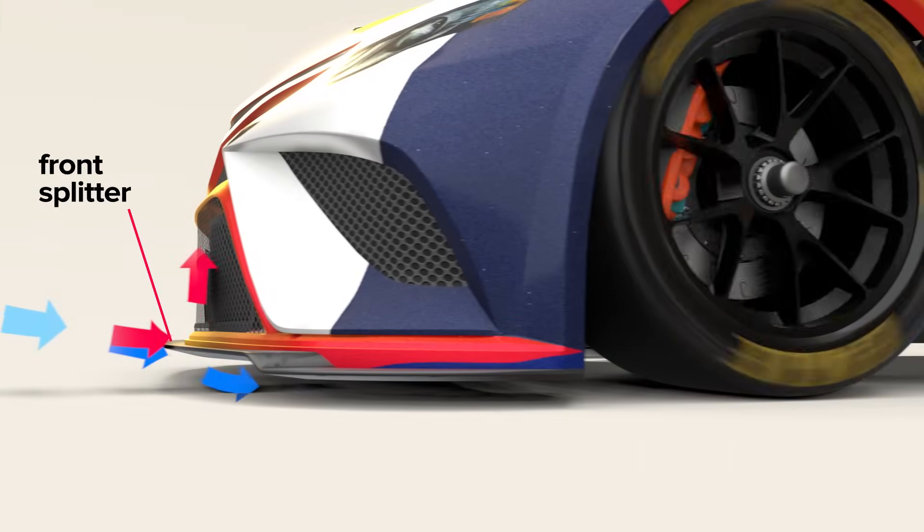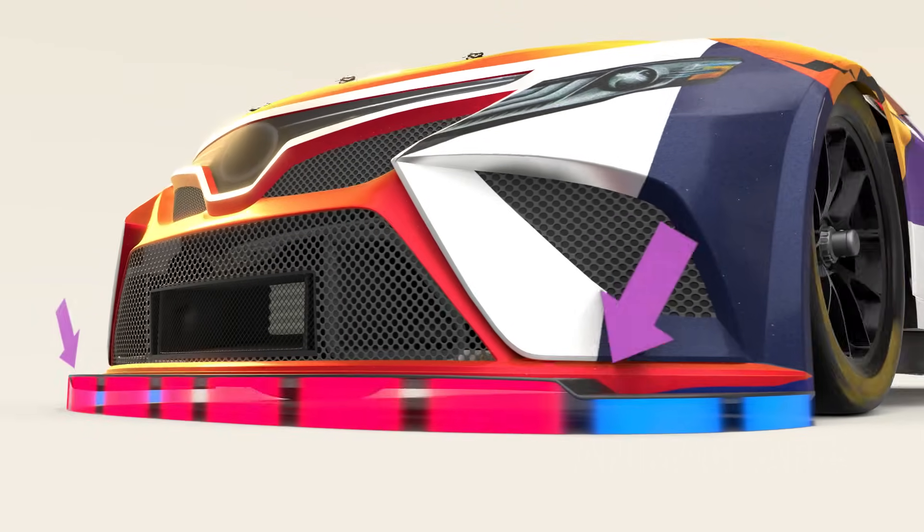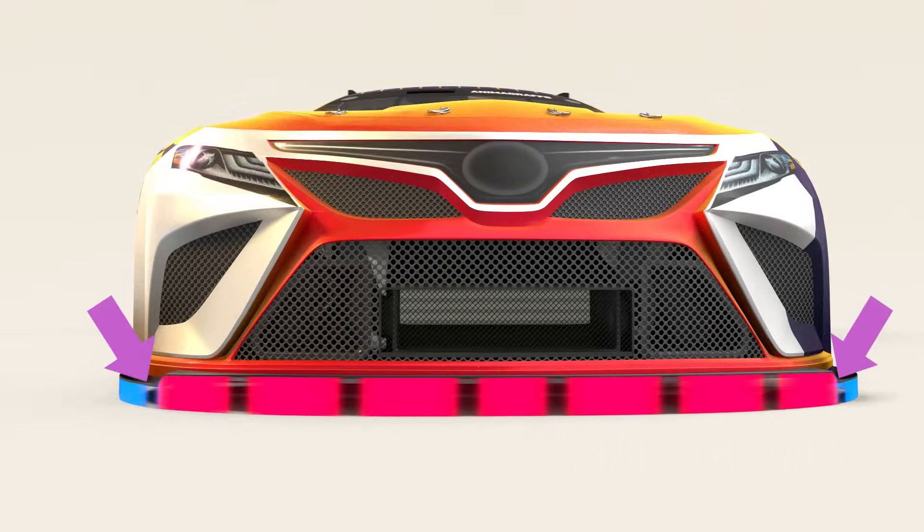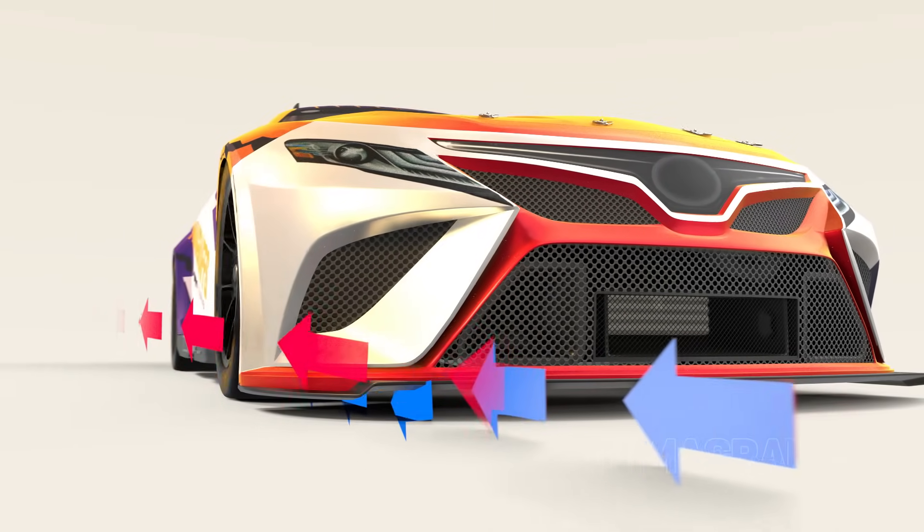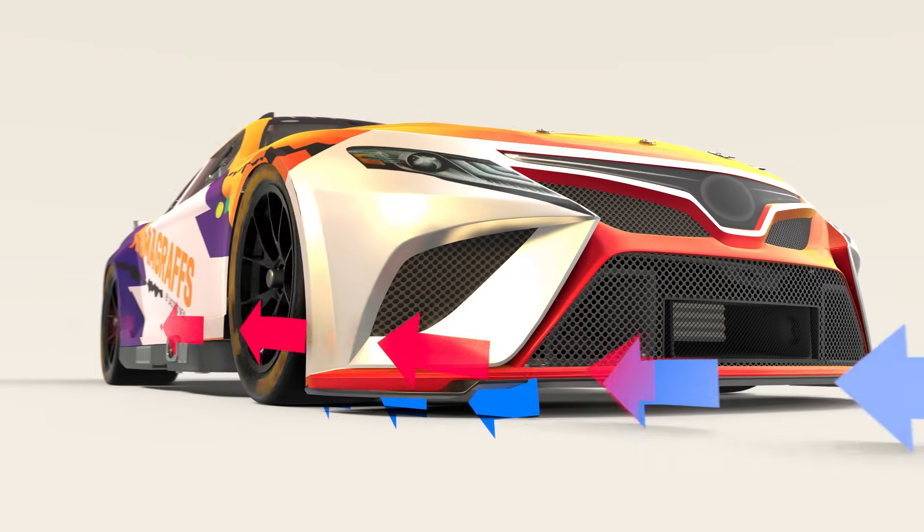The front splitter is angled to create downforce for the front of the car. The stepped design, with a raised section in the center, allows some air underneath the car, while the lowered sides push air around the front, keeping it away from the tires to avoid drag.